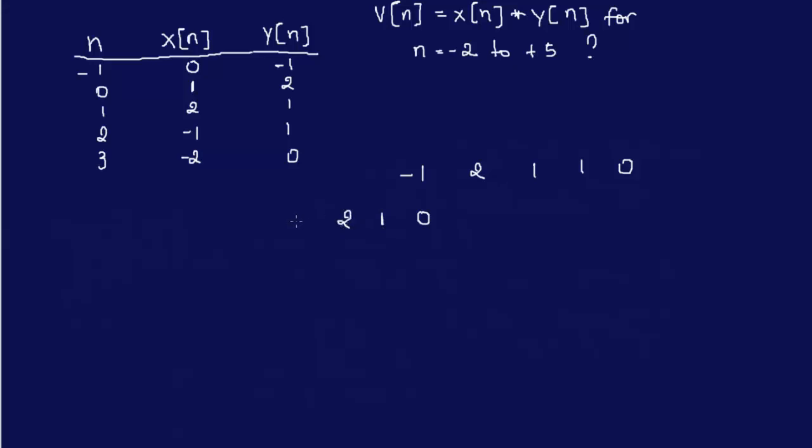So we'll start over here at 0 for X of n, and we have 1, 2, minus 1, and minus 2. For X of n we multiply by minus 1 and then we shift it to the left. That's what we did here, because after I uploaded that video I kind of remembered this method as well.